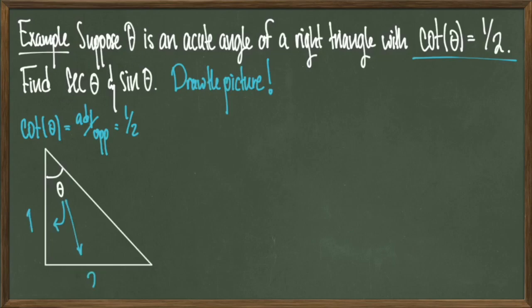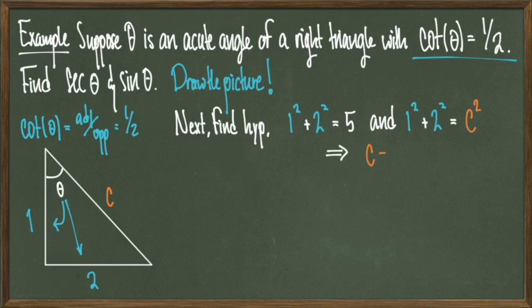I'll place my angle theta at the top here and realize that if cotangent of theta is equal to 1 over 2, which is equal to adjacent over opposite, I will make my adjacent side equal to 1 and my opposite side equal to 2. Now that I know the shorter sides of this triangle, I can use the Pythagorean theorem to solve for the hypotenuse. When I do this, I see that my hypotenuse c has length square root of 5.